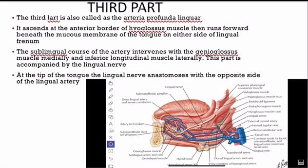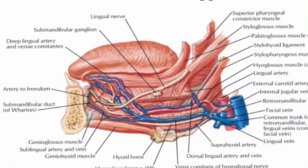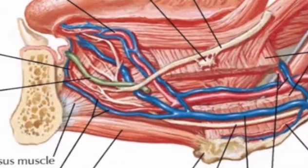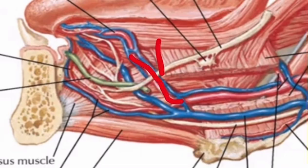This third part is accompanied by the lingual nerve — whereas the first part was accompanied by the hypoglossal nerve. At the tip of the tongue, the lingual artery anastomoses with the opposite side lingual artery. Now I'm zooming in on the third part in the diagram.